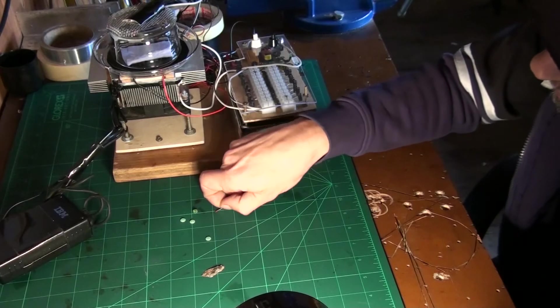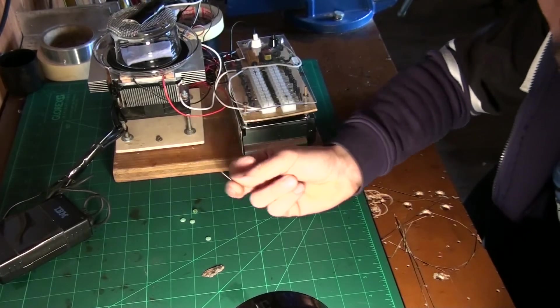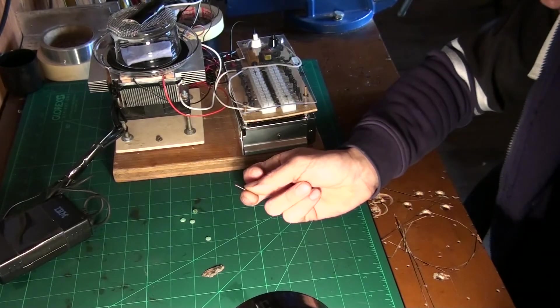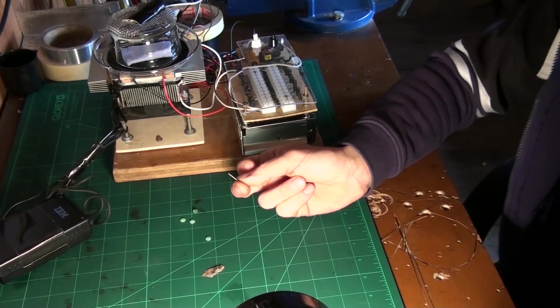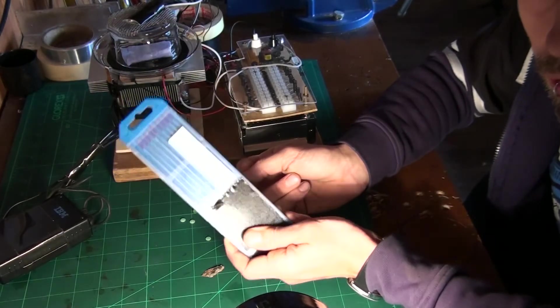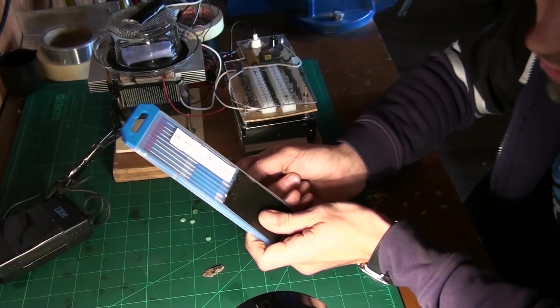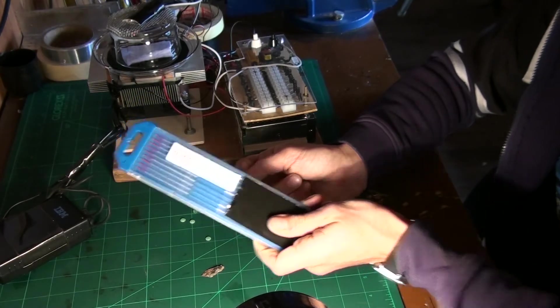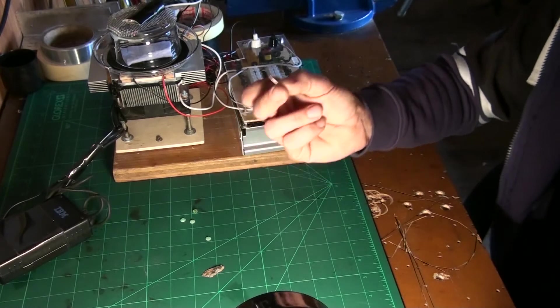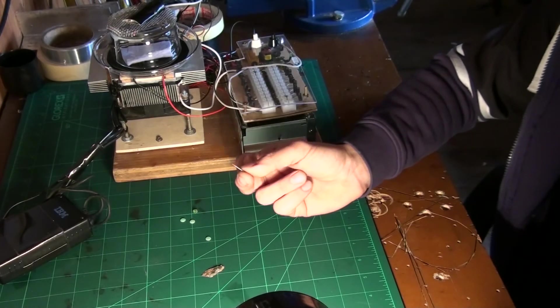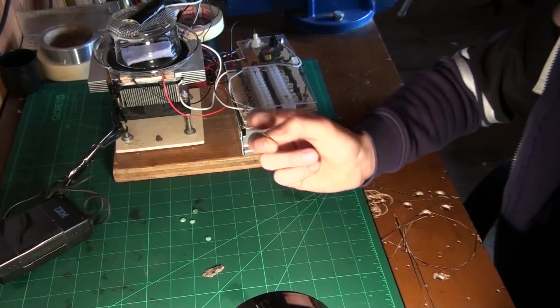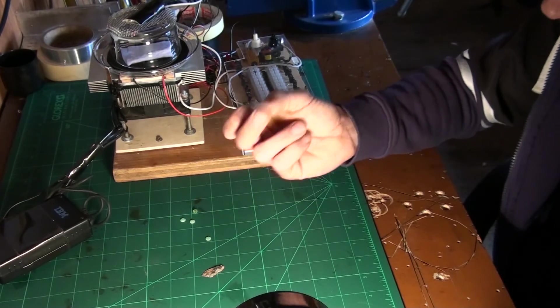And also this here is interesting. This is a small piece of a thoriated welding rod. Basically it's this here, these are thoriated welding rods. They contain 2% of thorium. And this here is quite weak, it's really not that radioactive but it gives off alpha quite nicely.